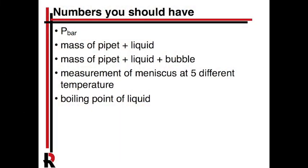When you're done, you should have basically this set of numbers. You should have the atmospheric pressure, which you should be able to measure in the classroom barometer. You'll have the mass of the pipette and the liquid before you add the bubble, and the mass after. We'll do some calculations to figure out the bubble size. And then finally we're going to have this measurement of the meniscus, the volume measurement to the nearest hundredth of a milliliter. So 0.01 milliliters you should be able to estimate, and do that at five different temperatures. And then finally we need the boiling point of the liquid.